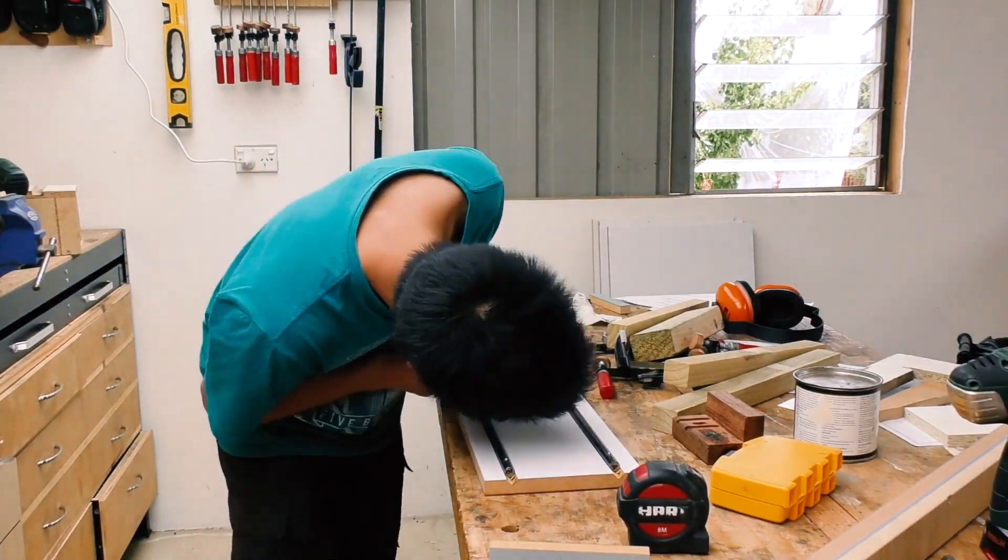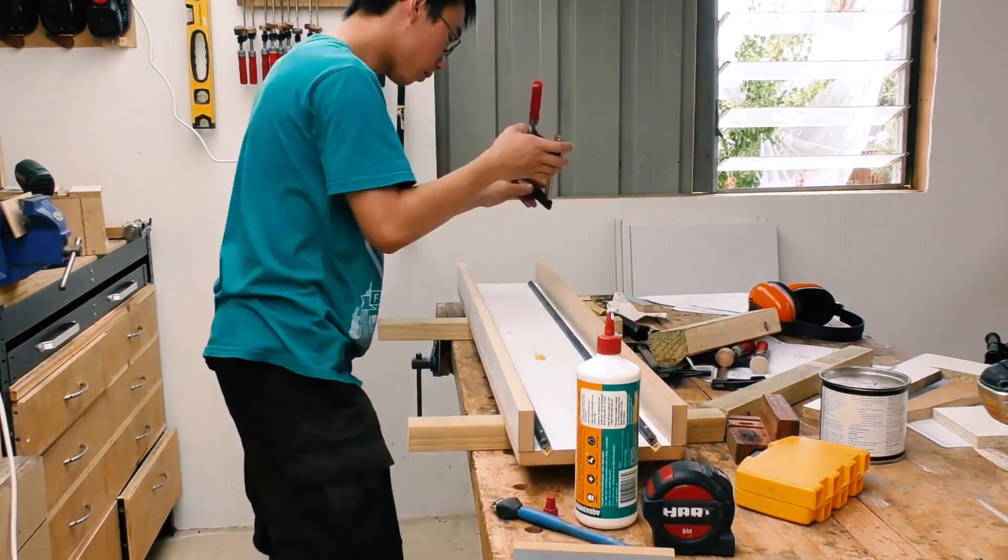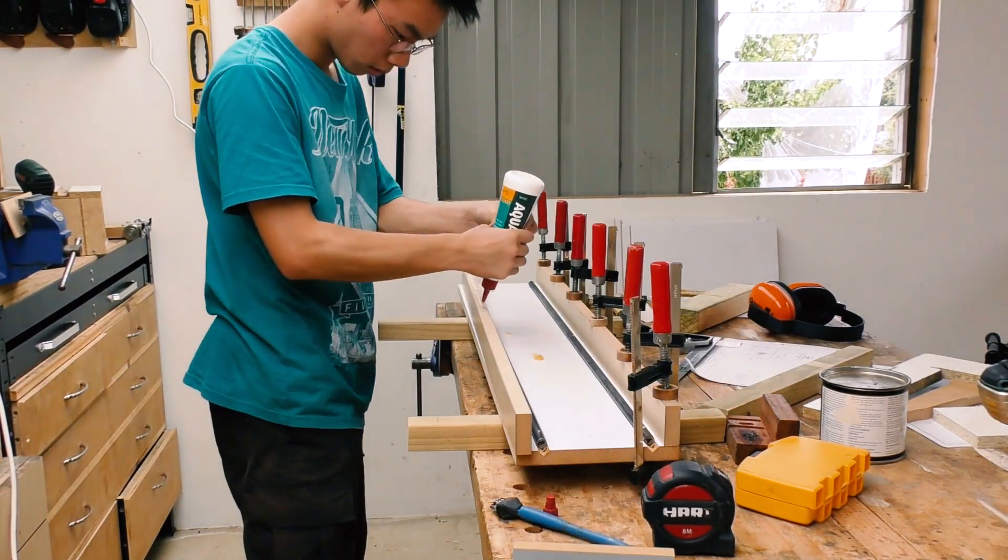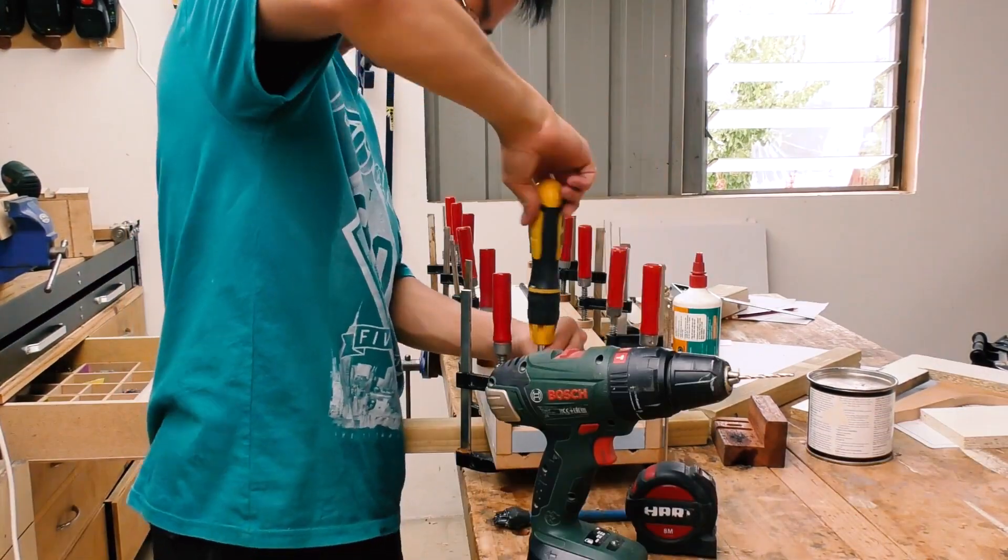Once everything looked good, I can start gluing up the top of the sliding table. And the end caps are just screwed on.